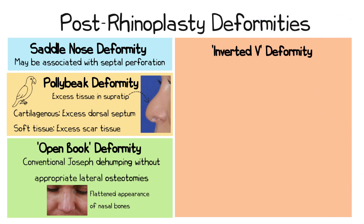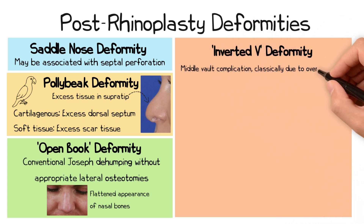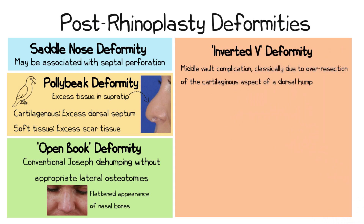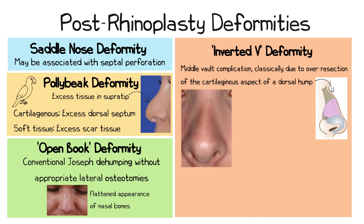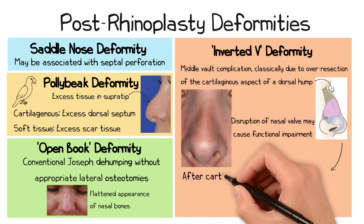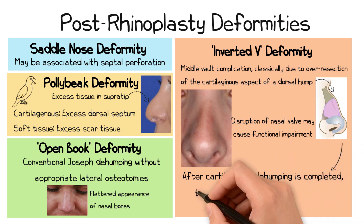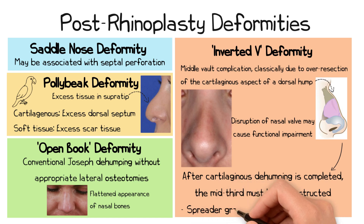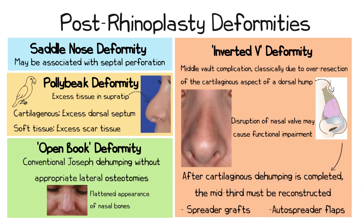An inverted V deformity is an unwanted complication of the middle vault, classically arising from over-resection of the cartilaginous portion of a dorsal hump. As its name suggests, the mid-third of the nose gives rise to the appearance of an upside-down V. The skin overlying the middle third is often thin, making irregularities hard to conceal. Aside from the undesirable aesthetics, there is often a functional component with disruption of the nasal valve. Once a cartilaginous de-hump is carried out with disarticulation of the septum from the upper lateral cartilages, it is necessary to reconstruct the mid-third, which can be done with spreader grafts or auto-spreader flaps.